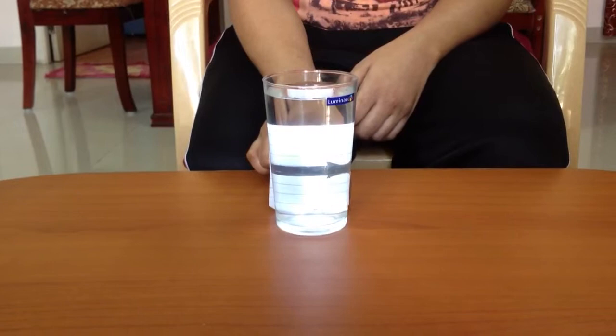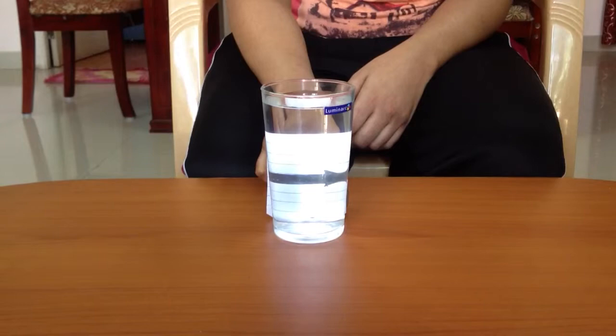Why does this happen? This inversion of image depends on the distance between the object and the lens. In this case, the glass with water acts as a lens.